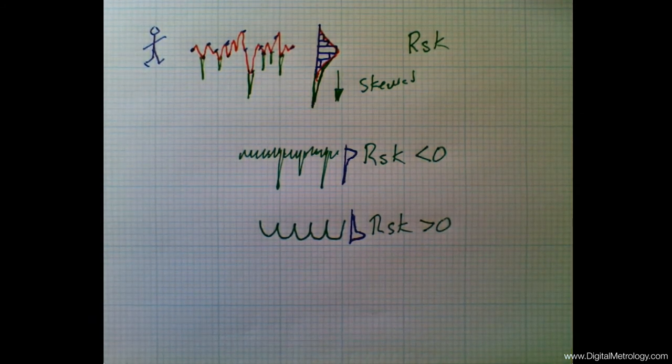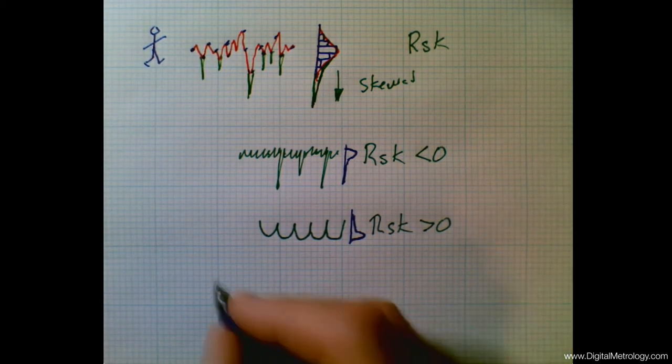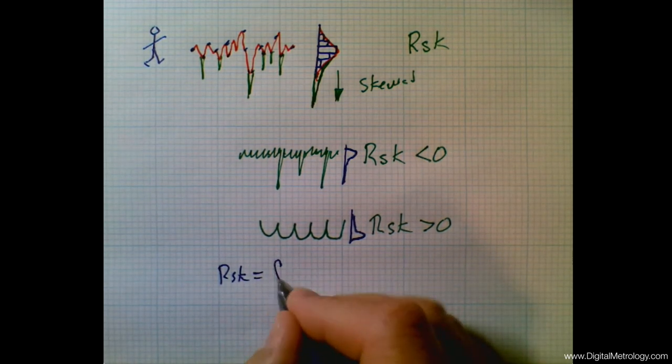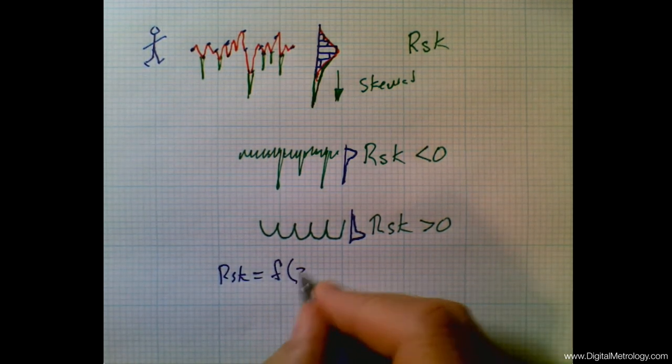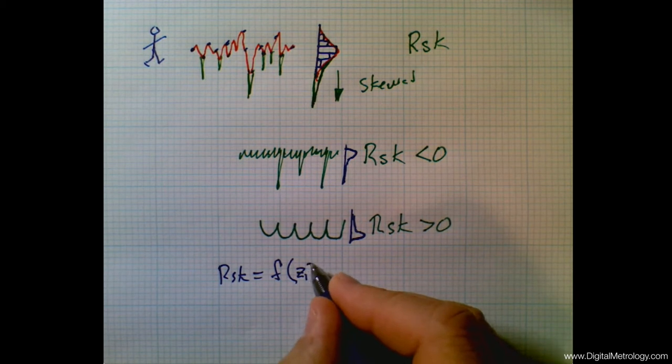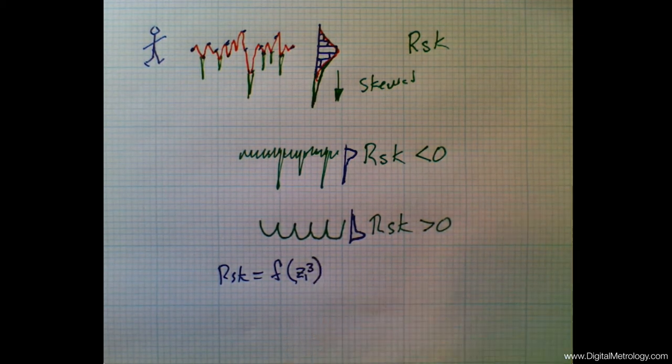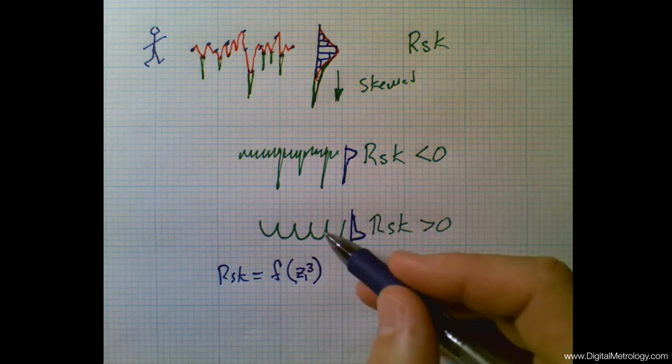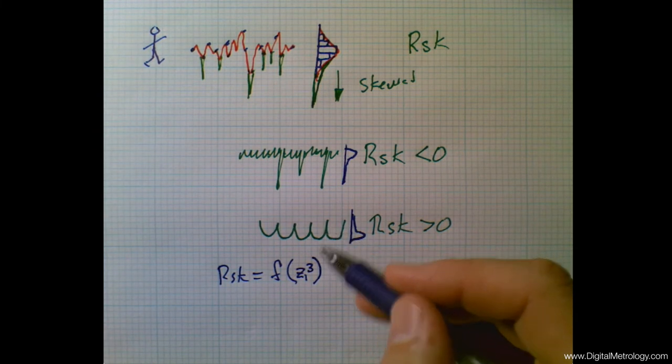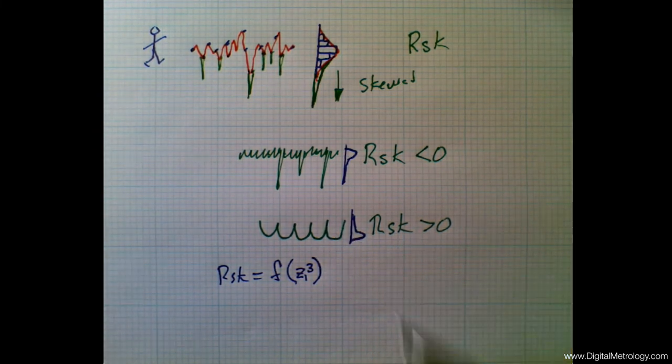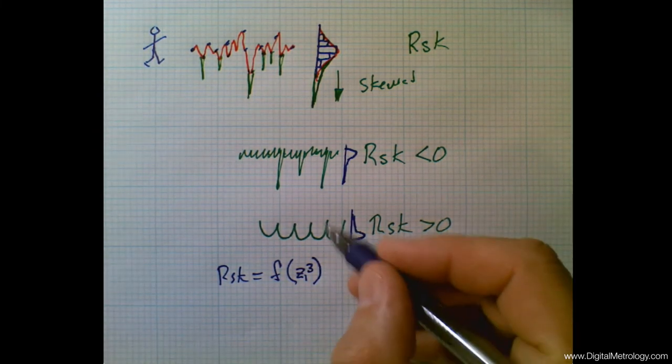But the problem arises with the skewness parameter due to its math. The calculation of skewness, RSK, is actually a function of taking those Z heights and cubing them to the third power. So each data point gets multiplied by itself and then again, and it turns out that points that are far away from zero really get stretched out.